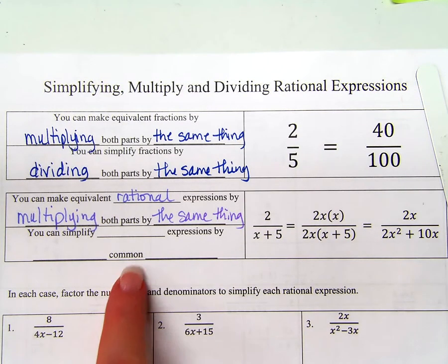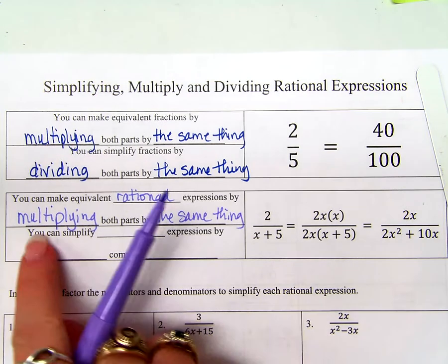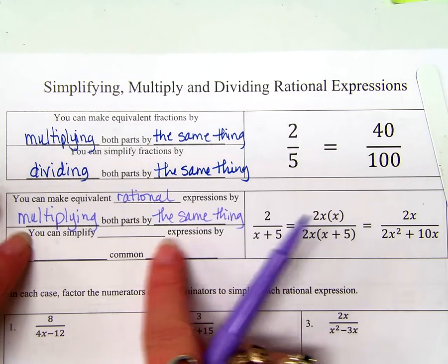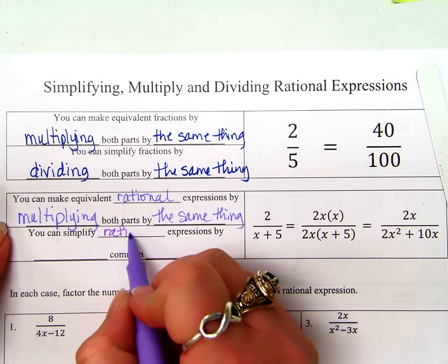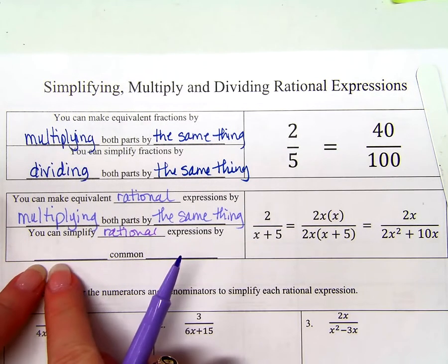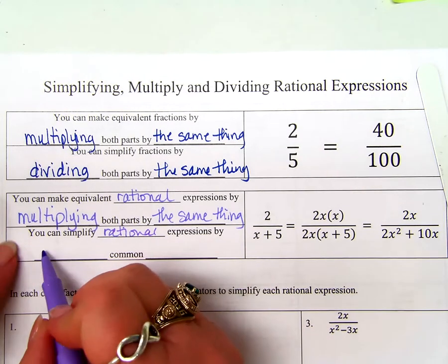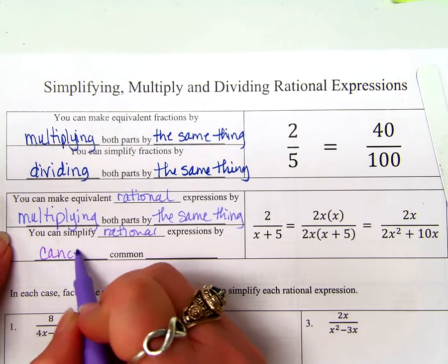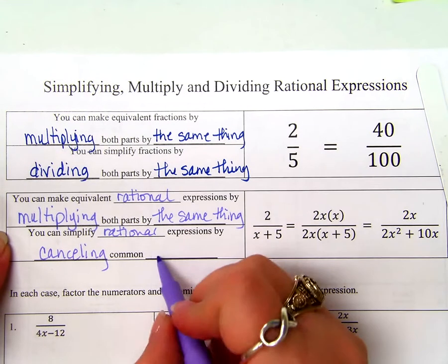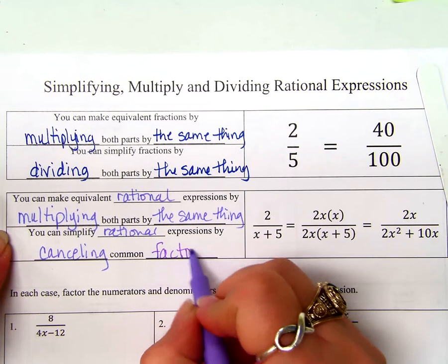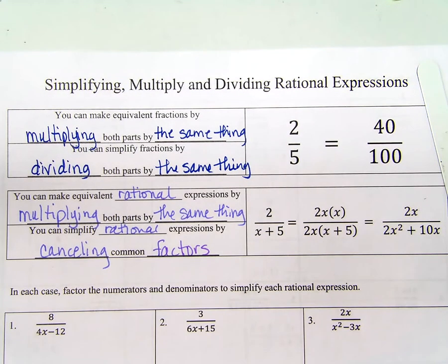Wait, what does that word even mean? Look. What does that mean? Ratio. What's another word for ratio? Fraction. Wait a second. This up here said fraction. You're telling me this is going to be like the same? Oh. You can make equivalent rational expressions by? What do you think? Multiplying both parts by the same thing.